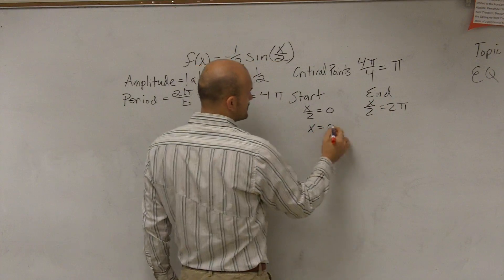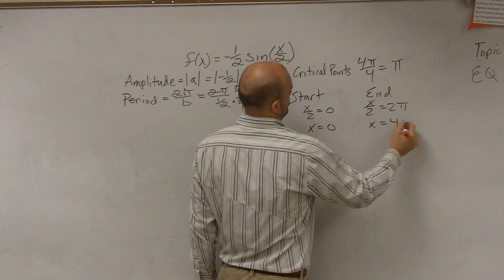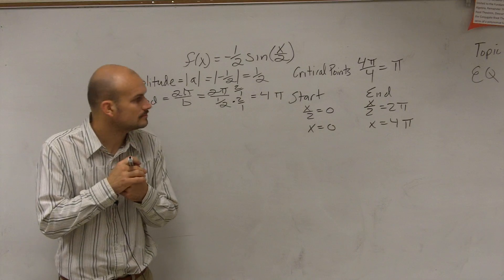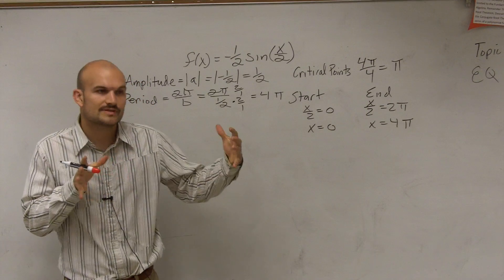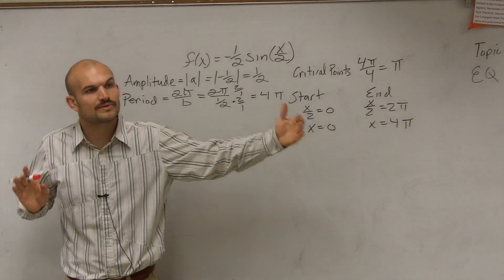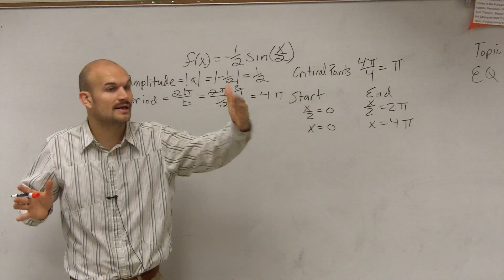By solving for x. Wait, wait. The start is where you, the x over two is whatever's in the point of the state? Mm-hmm. So what I would do is you take whatever's inside your parentheses and set it equal to zero. That's going to be where your first period, you could say, is going to start and end.